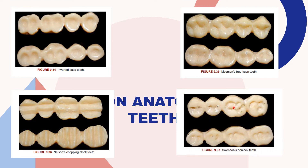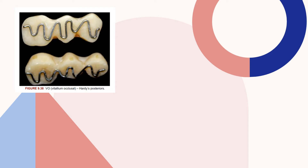These are Svensson's non-lock teeth, designed by Svensson. Flat occlusal surfaces with sluiceways for shredding and allowing food to escape from the occlusal table. They also provided some balancing contact as mild buccal and lingual inclines were provided. Coming to Hardy's vitallium occlusal, that is V-O or Hardy's posteriors — these are non-anatomic teeth which contain metal inserts in the occlusal surface.